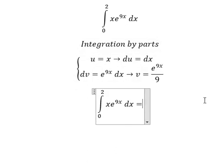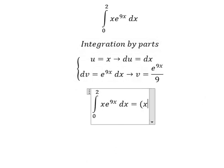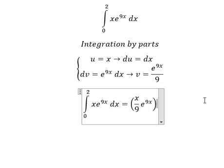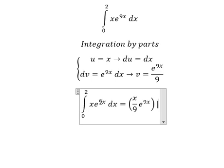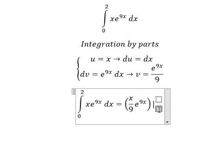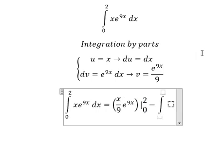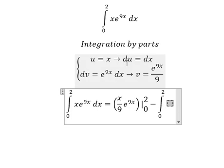We have u multiplied by v, which is x over 9, e to the power of 9x, and we put the bounds from 0 to 2. Minus, we have the integration from 0 to 2 of u multiplied by v.